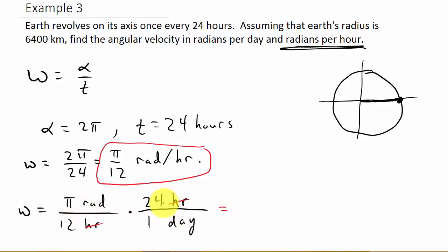And so if we multiply this out, well look at this. 12 goes into 24 twice. So that would be 2 pi radians per day.